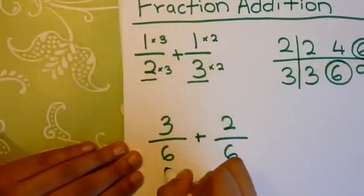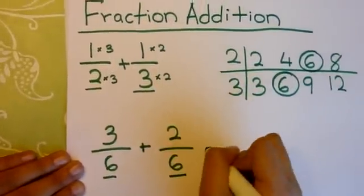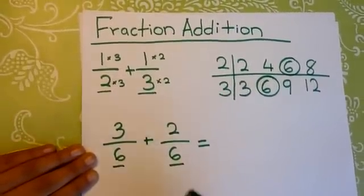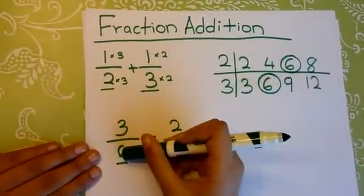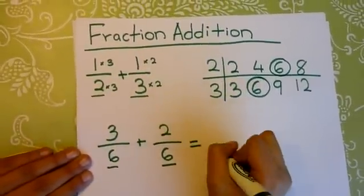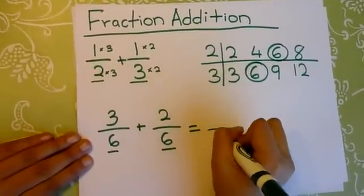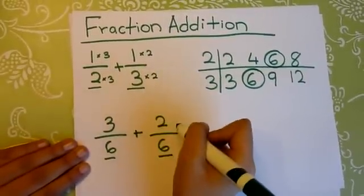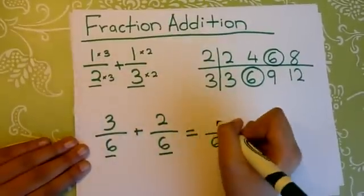Now the denominators are the same, so we can start adding. Whenever we add fractions with a common denominator, we never add the denominator. So the denominator is automatically 6. Now all we have to do is add the numerators. 3 plus 2 is 5.